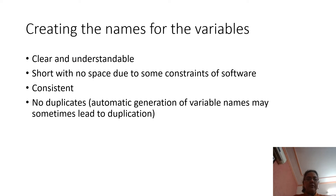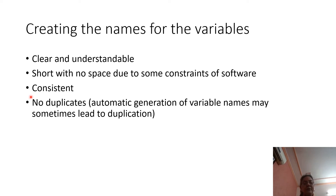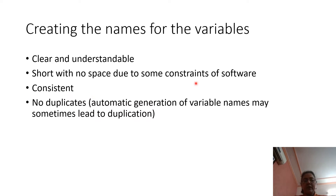We can also name the variables, keeping in mind certain guidelines: names should be clear and understandable, there should be no spaces in variable names even if two words are combined, names should be used consistently everywhere, and we should try to create our own names to avoid duplication. If we leave variables to be named by software, sometimes there can be duplicate names, which should be avoided.